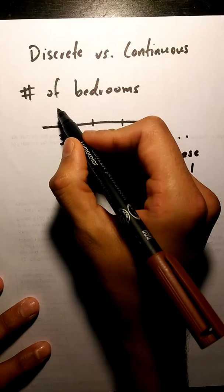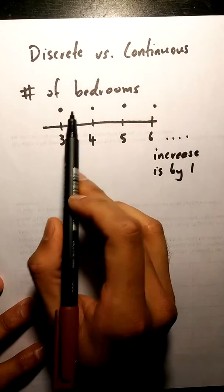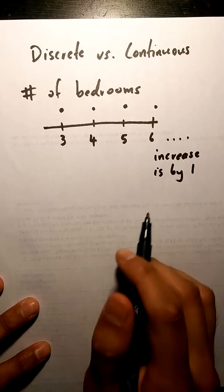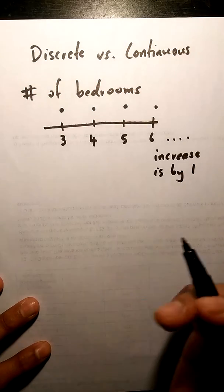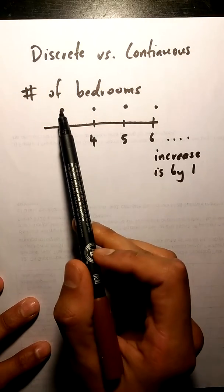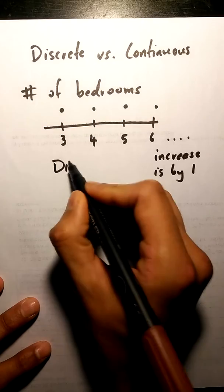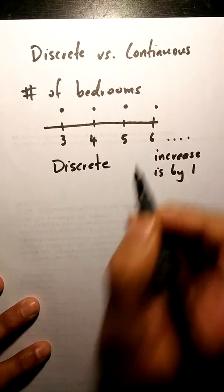You can only have a fixed number of bedrooms. You cannot take a value in between these. You cannot have 3.2 bedrooms, 3.5 bedrooms, 5.6 bedrooms. You can only have these fixed numbers which makes this a discrete variable.